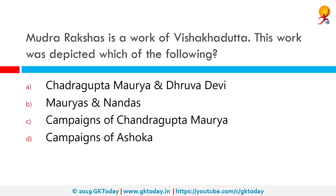Mudrarakshas is a work of Vishakhadatta. What did this work depict? The correct answer is the Mauryas and the Nandas — specifically the rise of Chandragupta Maurya. The Mudrarakshas is a Sanskrit language play by Vishakhadatta that narrates the ascent of King Chandragupta Maurya to power in India. It is an example of creative writing but not entirely fictional, dated between the late 4th century and the 8th century CE. It contains dramatic elements but is largely considered a source of historical data on the rise of Chandragupta Maurya.